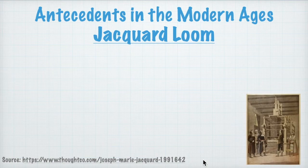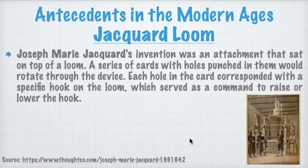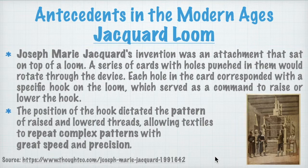Joseph Marie Jacquard's invention was an attachment that sat on top of a loom. A series of cards with holes punched in them would rotate through the device, and each hole corresponded with a specific hook on the loom, serving as a command to raise or lower the hook. The position of the hook dictated the pattern of raised and lowered threads, allowing textiles to repeat complex patterns with great speed and precision.